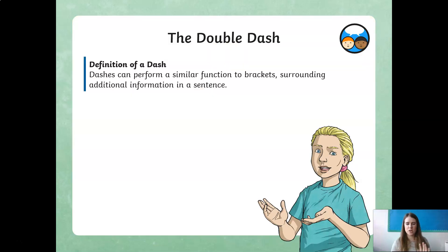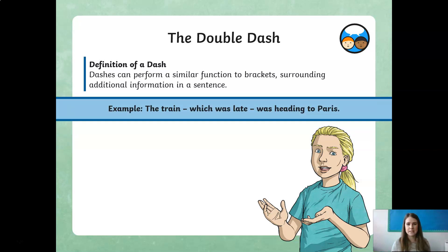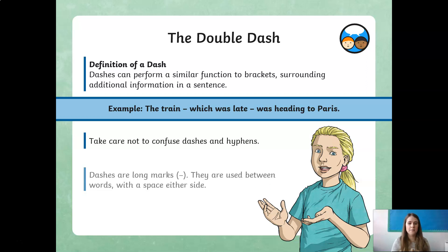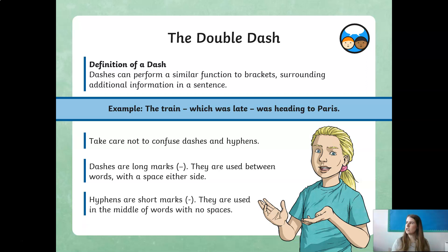Let's think about the double dash. A dash can perform a very similar function to brackets — they effectively surround additional information within a sentence. For example: 'The train — which was late — was heading to Paris.' That's a relative clause starting with 'which.' We must know that dashes are different from hyphens. Dashes are long marks used between words with a space on either side, surrounding a subordinate clause. Hyphens are very short and used in the middle of words — like 'grief-stricken' or 'blood-spattered' — with no spaces.